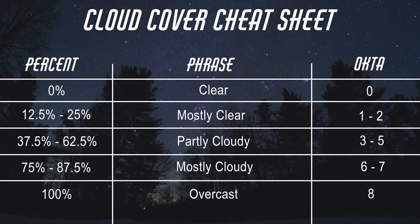That might not be so bad if it's just passing clouds. Sometimes you'll see a forecast go from 0 to 25 and back to 0, meaning there are a few passing clouds — could still be a perfectly good night. Depending on the website or app, it might not give you a percentage but instead a phrase like clear, partly cloudy, or mostly cloudy. Here's the cheat sheet for what those terms really mean.